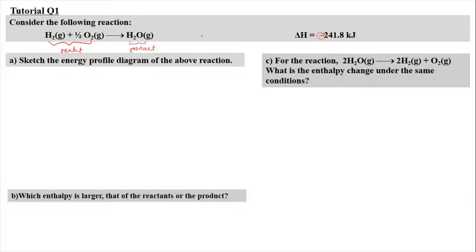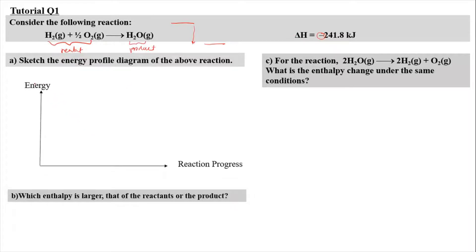It is an exothermic reaction because it gives a negative value. The level of the reactant is going to be higher than the product, and the energy drops — the energy difference gives a negative value. In order to draw it correctly, we start with the axes of the energy profile diagram: energy on the y-axis and reaction progress or reaction time on the x-axis.